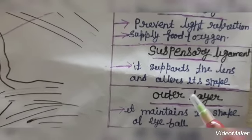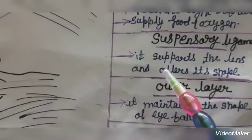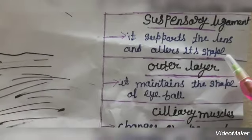Suspensory ligament, it supports the lens. It supports the lens and allows its shape to change.